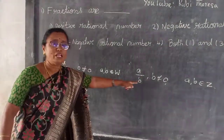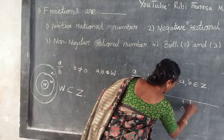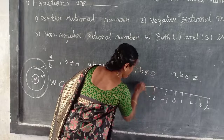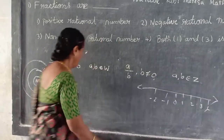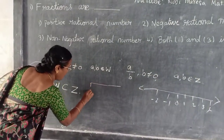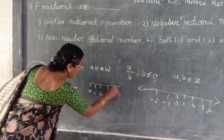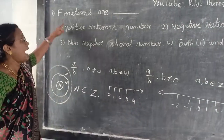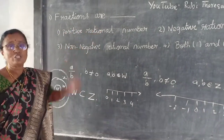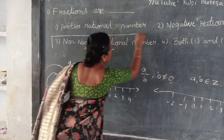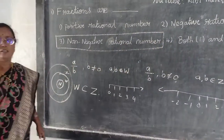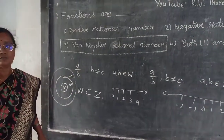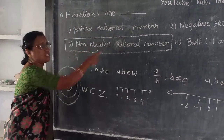In integers, you will get both positive and negative: zero, one, two, three, four, minus one, minus two, and so on. Whole numbers have a starting point: zero, one, two, three, four, and so on. So the correct answer is non-negative rational number. Now, non-negative rational number does not simply mean positive.